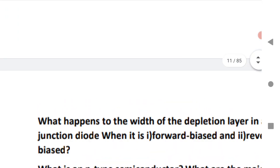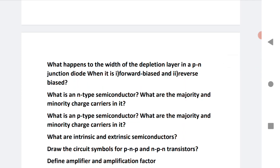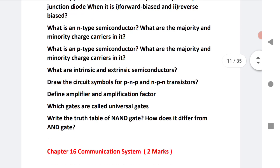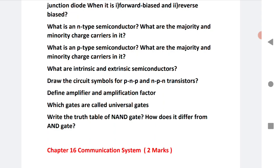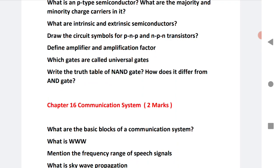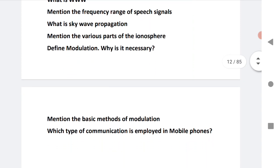Chapter 15, this is a very important chapter - semiconductor electronics. What happens to the width of depletion layer? I am expecting this question may be asked. Zener diode in forward bias and reverse bias. Next is n-type semiconductor - what are the major and minority charge carriers in p and n type? Same question: what are intrinsic and extrinsic semiconductors? Draw circuit diagram - very important question - NPN and PNP transistor as an amplifier. Amplification factor. What gates are called universal gates? Next, the truth table of NAND gate and AND gate - how they differ?